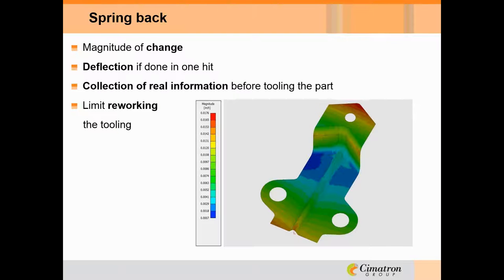Here's an example of a part put through a springback analysis. The red tip out at the far end is getting close to about 18 thousandths of an inch away from where it should be. This analysis looks at how much deflection would occur in this part if it were hit at one time. What we're looking at is not just an array of blue, yellow, green, and red — it's real data taking real measurements. That data is captured and can be used later. The purpose is to understand what's going to happen before we cut the tool, so we can minimize rework.